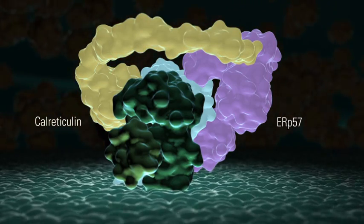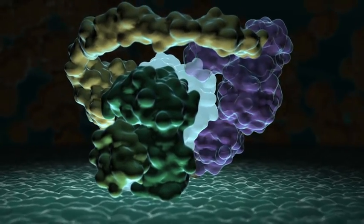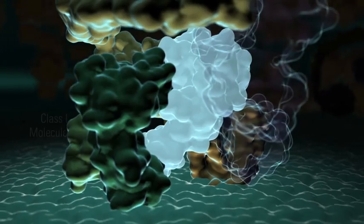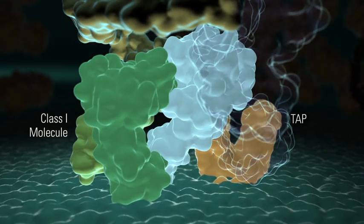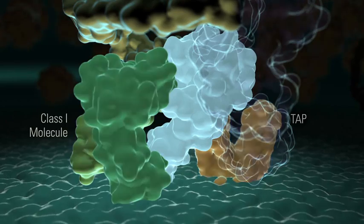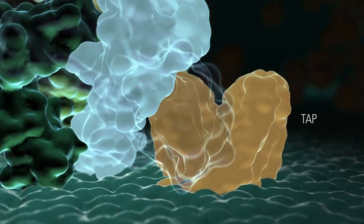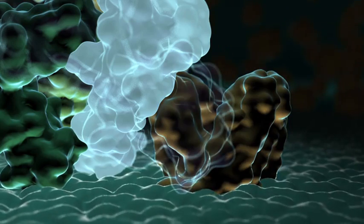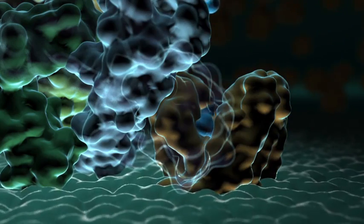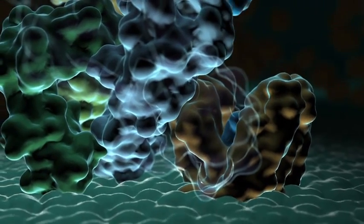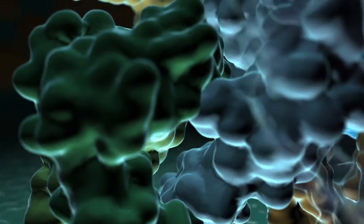Tapasin binds ERP57, which along with its associated calreticulin chaperone plays an important structural role in stabilizing the PLC. Tapasin also serves as a bridge between the class 1 molecule and TAP, ensuring proximity of class 1 to incoming peptides. Finally, tapasin stabilizes the TAP transporter, increasing the flow of peptides into the ER lumen. However, recent research suggests that tapasin has a more direct role in peptide loading, actively promoting the loading of high-affinity peptides.